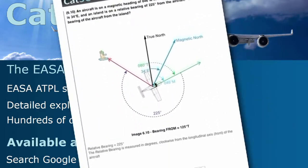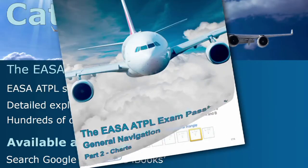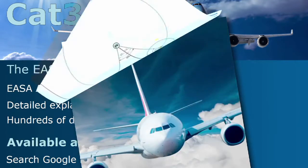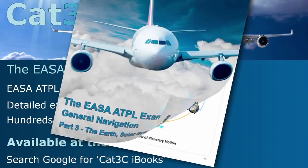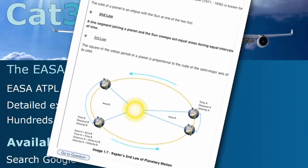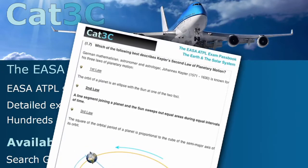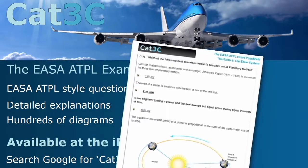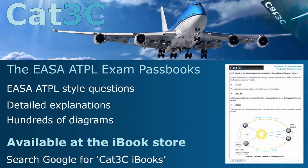The passbooks contain hundreds of exam-style questions and are supported by clear, in-depth explanations and interactive diagrams. The link to the iBooks can be found on the webpage below or at the Cat3C website at the Bookstore tab.